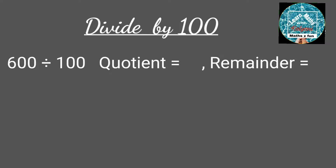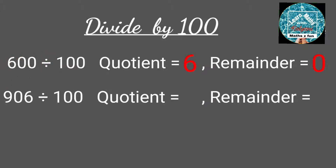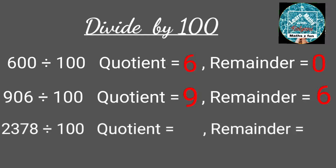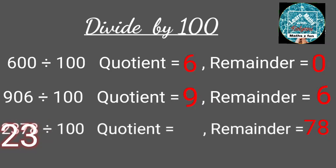When 600 is divided by 100, the remainder is 00, that means 0, and the quotient is 6. When 906 is divided by 100, the remainder is 06, that means 6, and the quotient is 9. When 2,378 is divided by 100, the remainder is 78 and the quotient is 23.